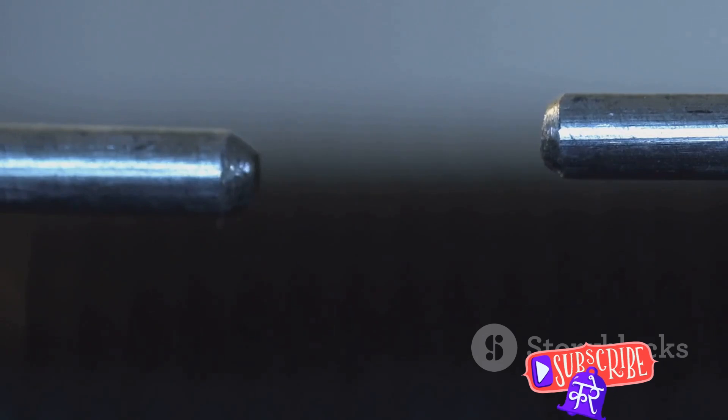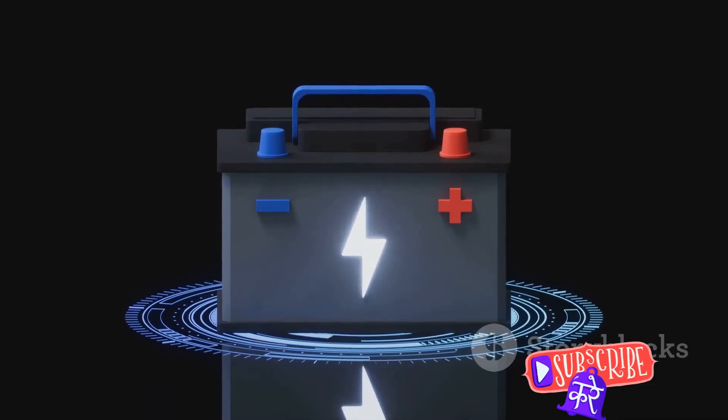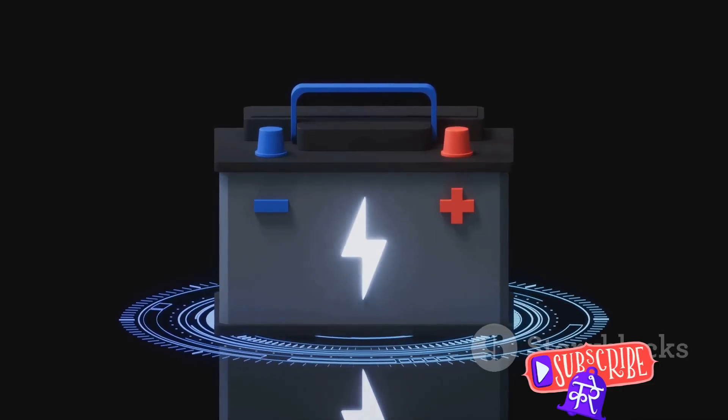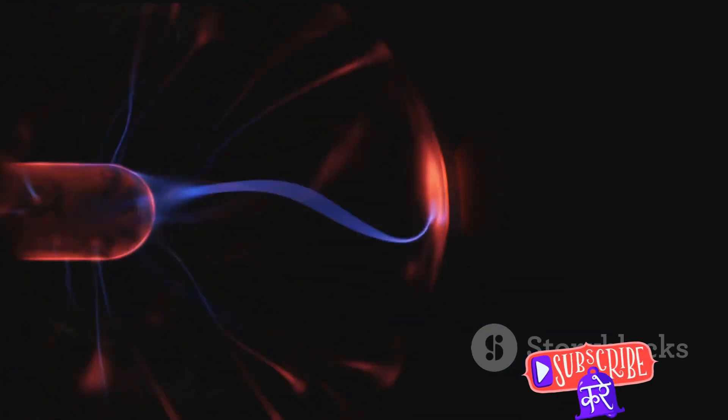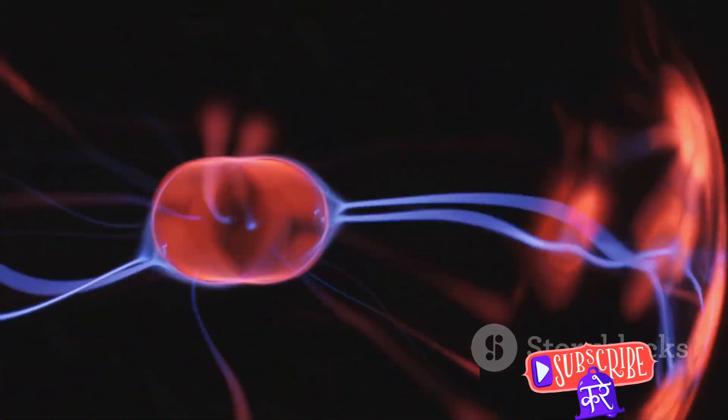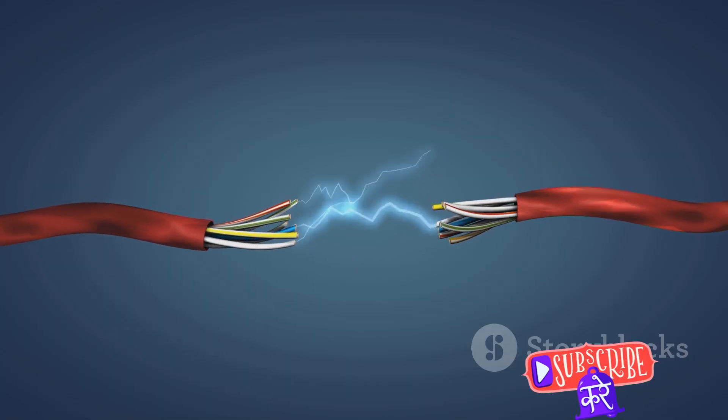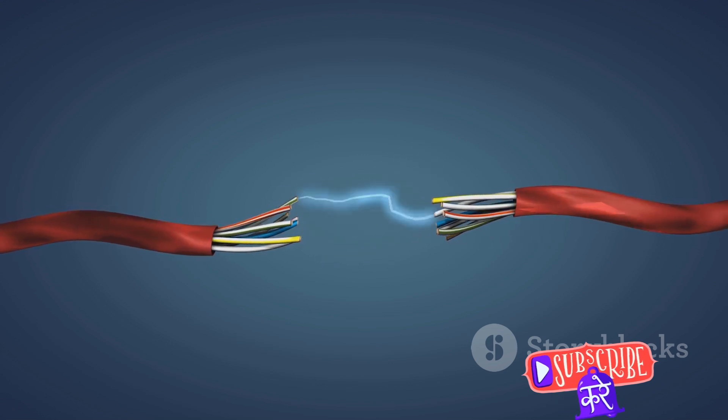But what about the spark gap? Well, think of the spark gap as a type of switch, but not your everyday light switch. This switch has a bit more flare. The spark gap allows the energy to build up to a high voltage before it's released. The energy is stored in a capacitor which is connected to the spark gap. When the voltage across the capacitor reaches a certain level, the air in the spark gap ionizes, becoming conductive and allowing the energy to flow across it.